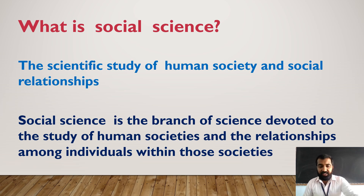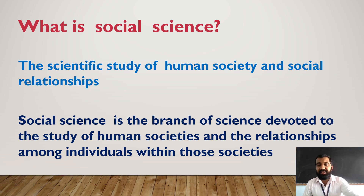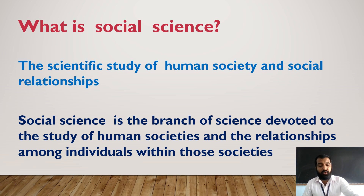These subjects are included in Social Science. This knowledge will help us to focus on the relationships among individuals in the society. It is a mixture of many subjects like History, Geography, Political Science, Economics, Sociology, Psychology, and other related aspects. At school level, Social Science includes History, Geography, and Civics. History is the study of past events. Geography is the study of the physical features of the Earth and its atmosphere and of human activity as it affects and is affected by these. Civics is the study of the rights and duties of citizenship.